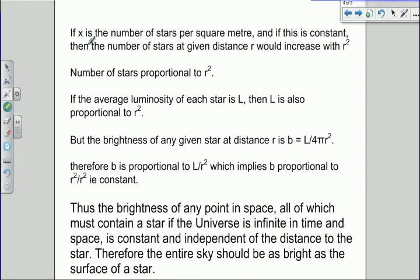The logic is, if you've got x number of stars per square meter, and if this is constant, which it would have to be if the universe is uniform, the number of stars at a given distance r would increase with r². So the number of stars is proportional to r². The brightness is proportional to 1 over r². It's actually equal to the luminosity divided by 4πr².